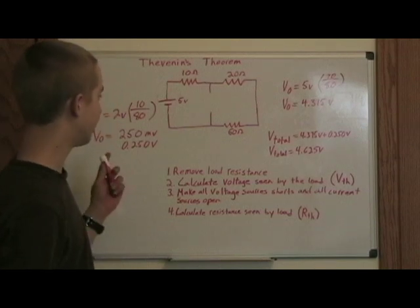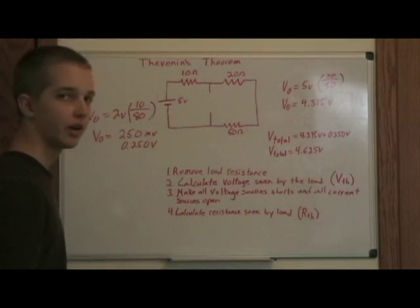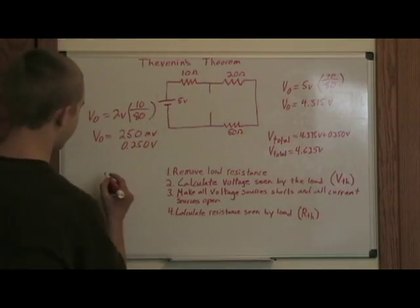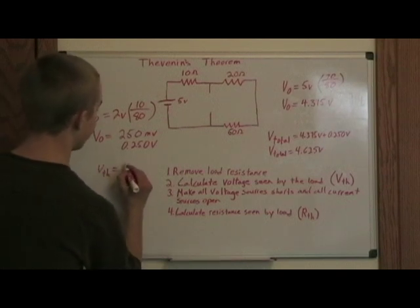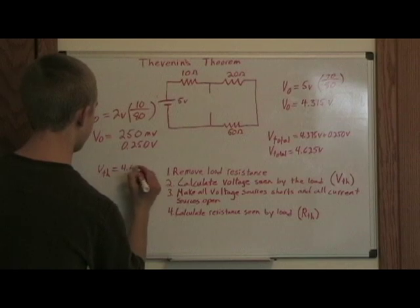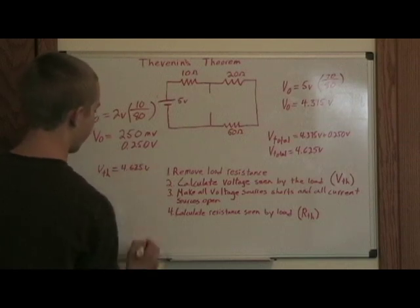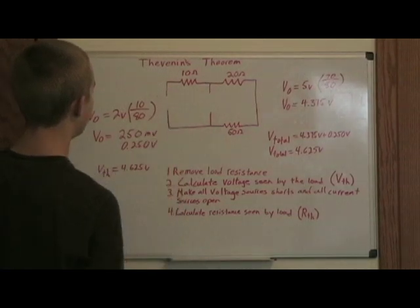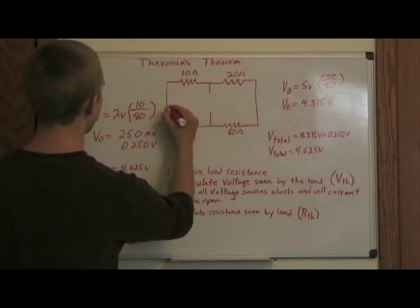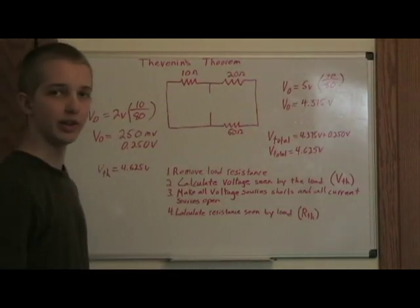So that's the Thevenin voltage. Now that we know the Thevenin voltage, or VTH, is equal to 4.625 volts, the last step is to short out this battery and calculate the Thevenin resistance.